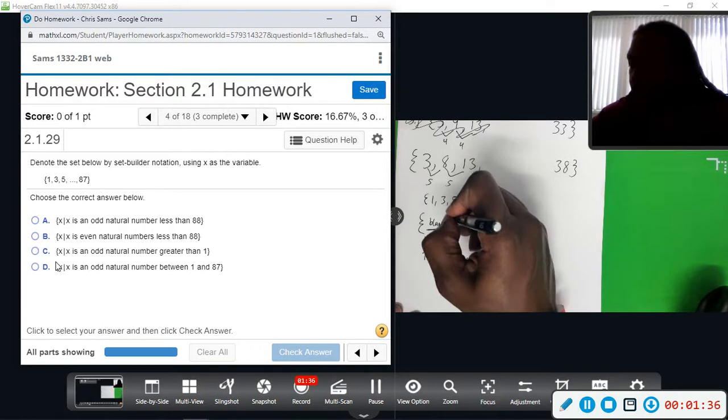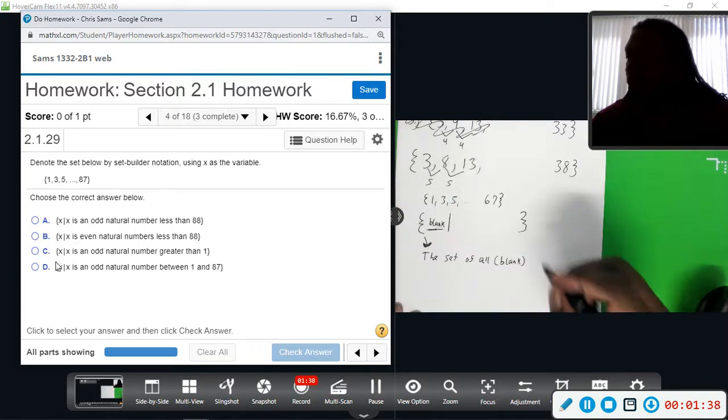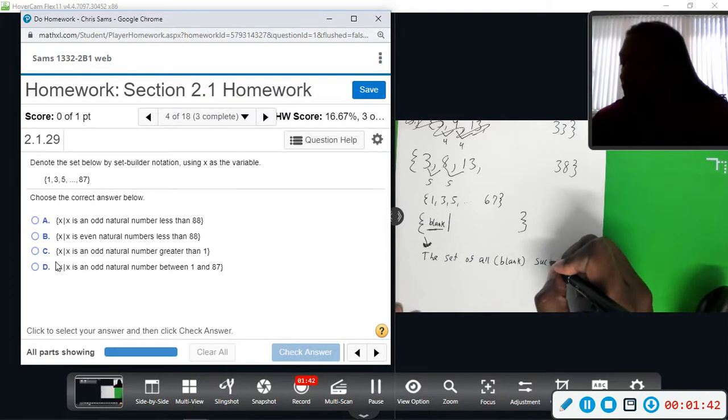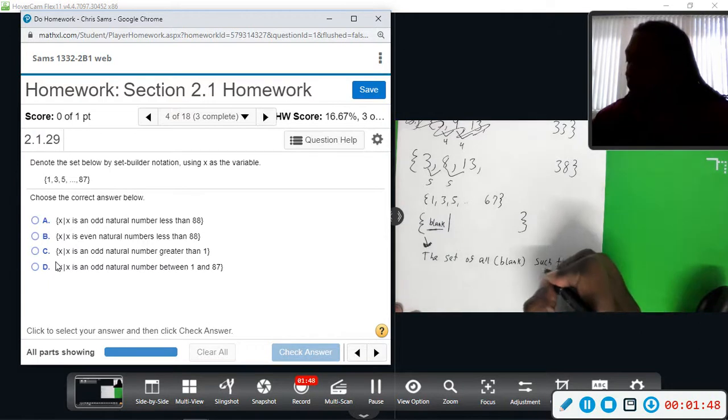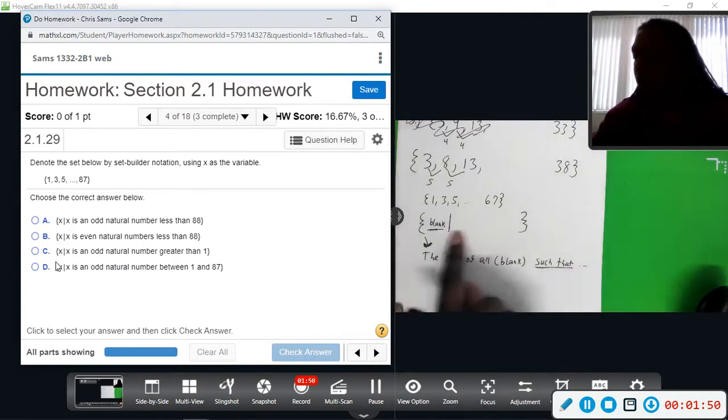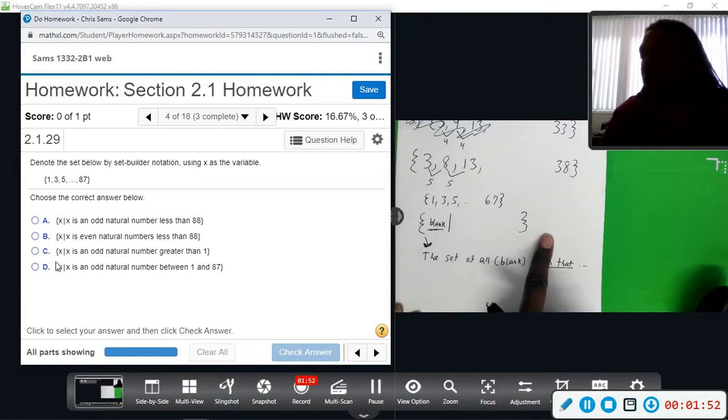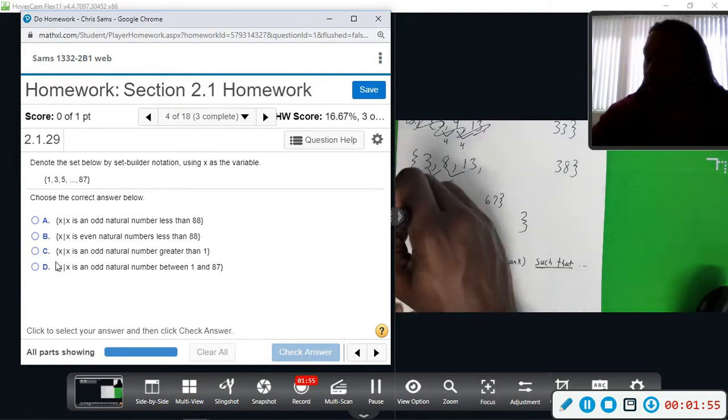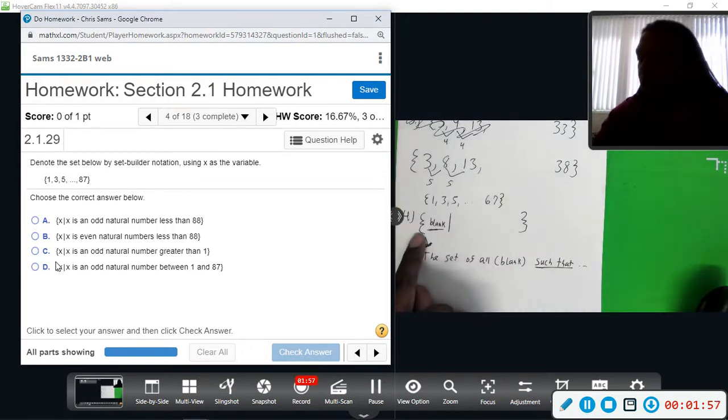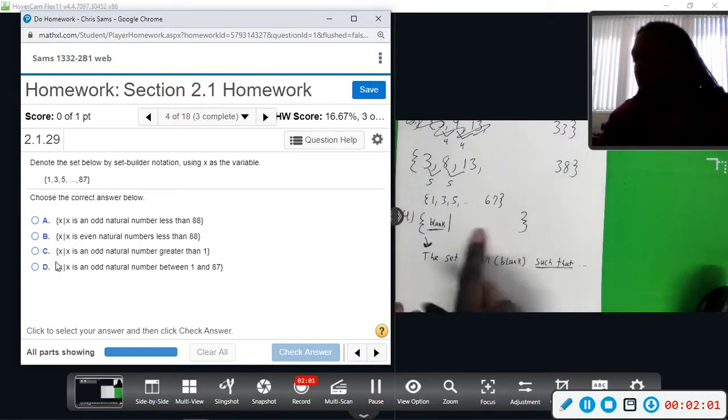The next symbol you see is a vertical bar, which is read 'such that.' Then you'll have some condition that they tell you. So set builder notation is: the set of all x such that x has the following property.